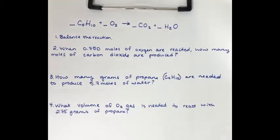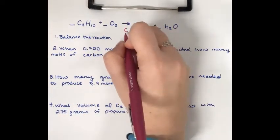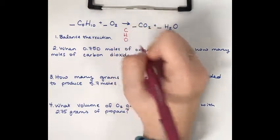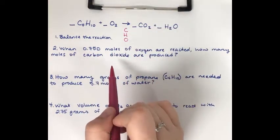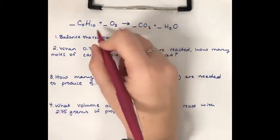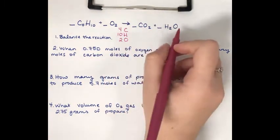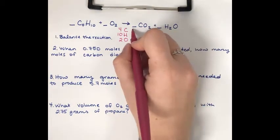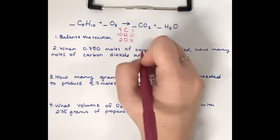For stoichiometry number two, it starts with balancing the reaction. Under the reaction, I'm going to list the different elements: carbon, hydrogen, and oxygen. I'm going to count how many I have of each atom on each side. For carbon, I have four on the reactant side. I have ten hydrogen and two oxygen. On the product side, I have one carbon, two hydrogen, and three oxygen.